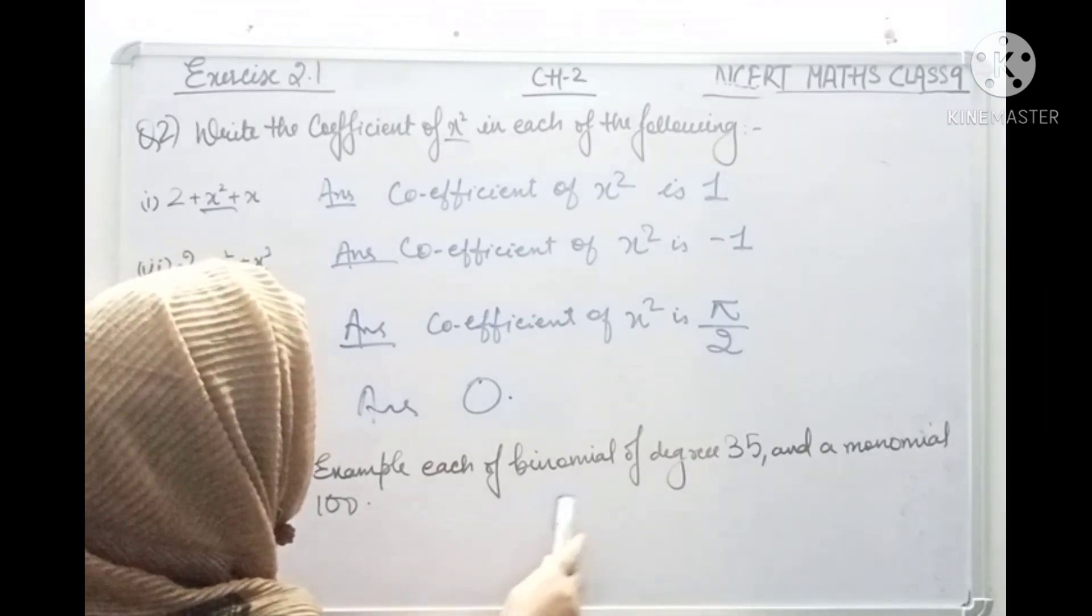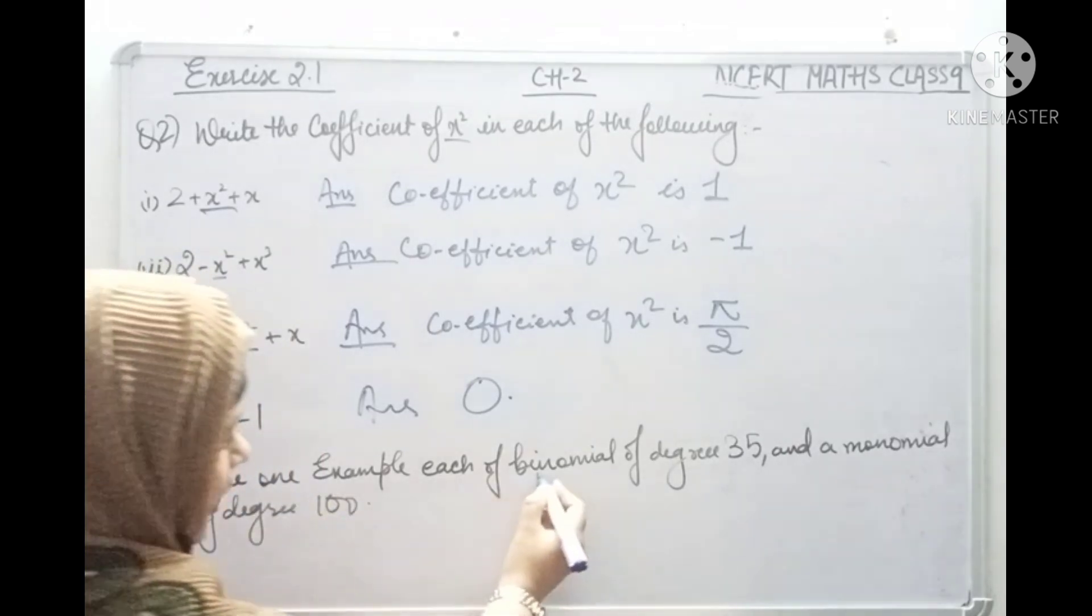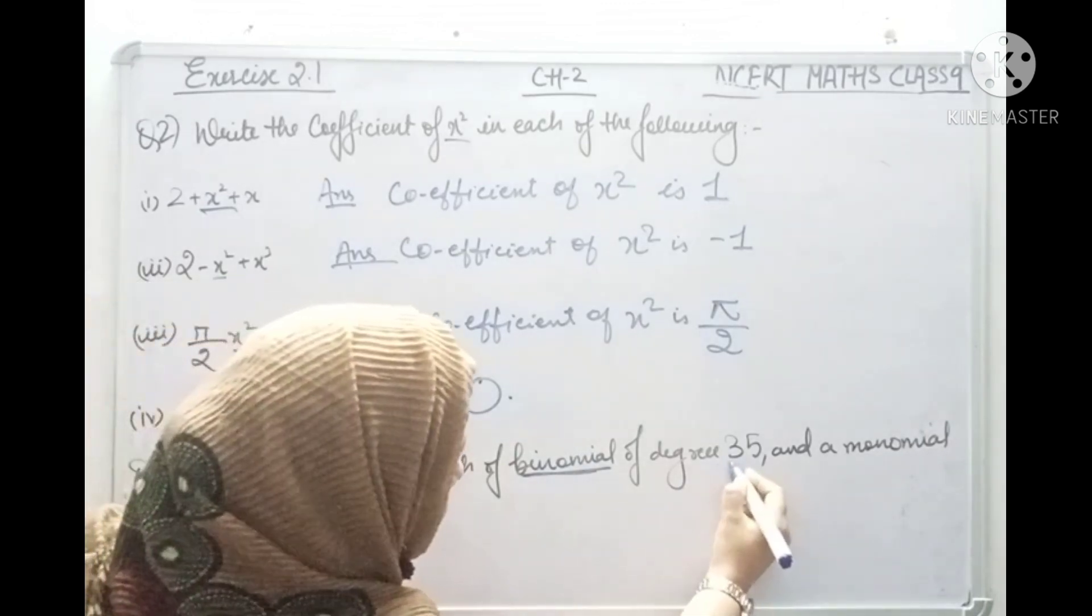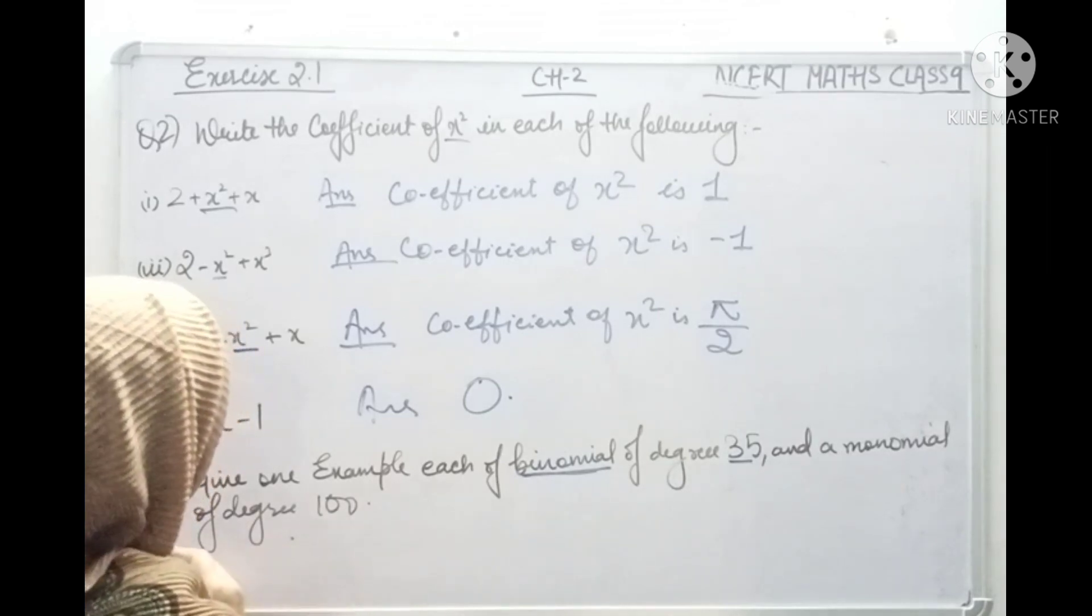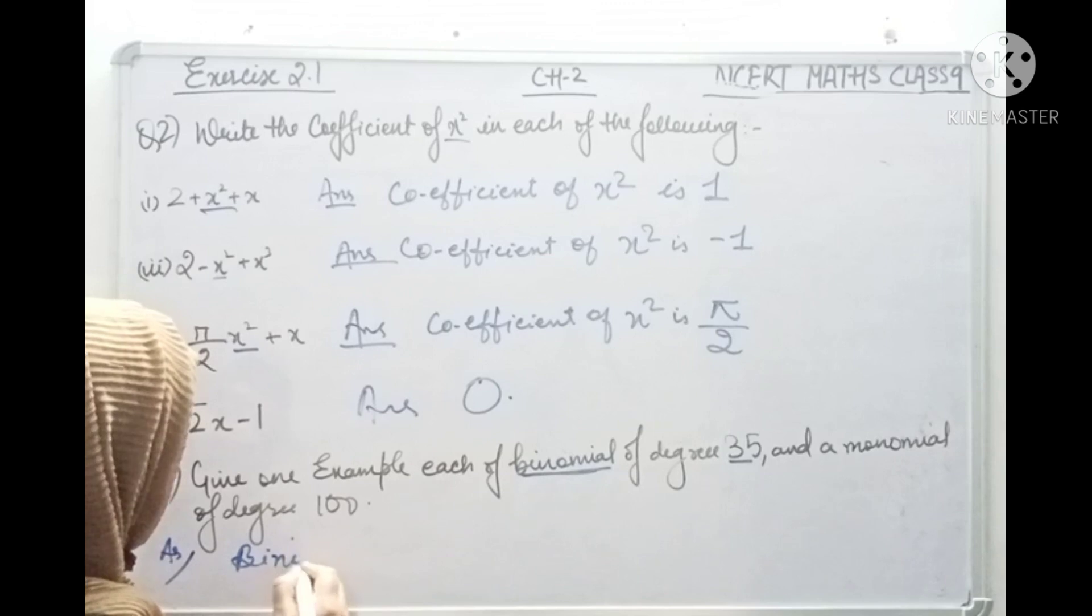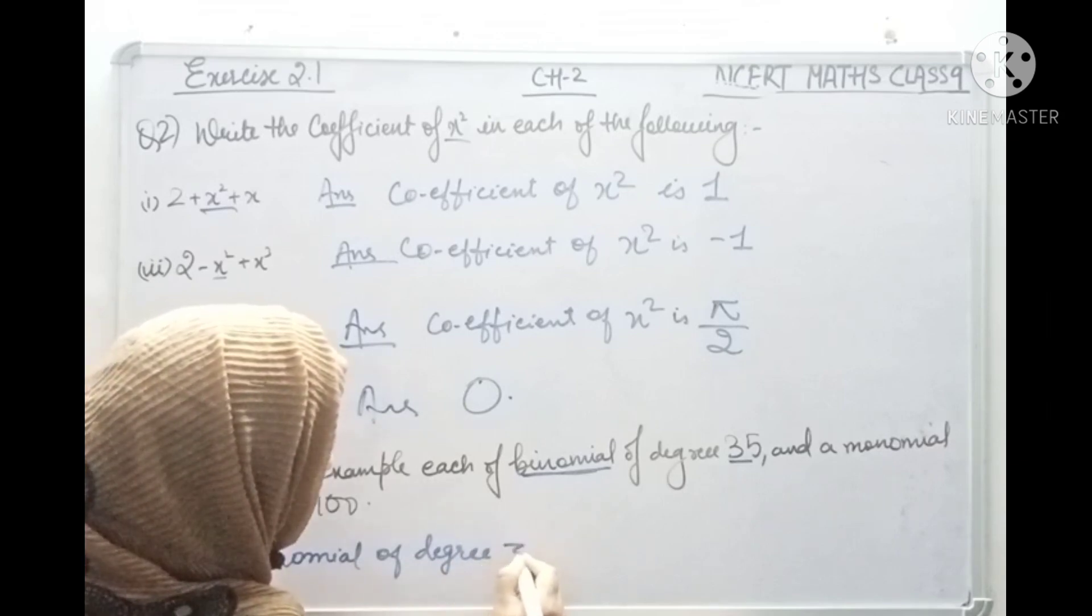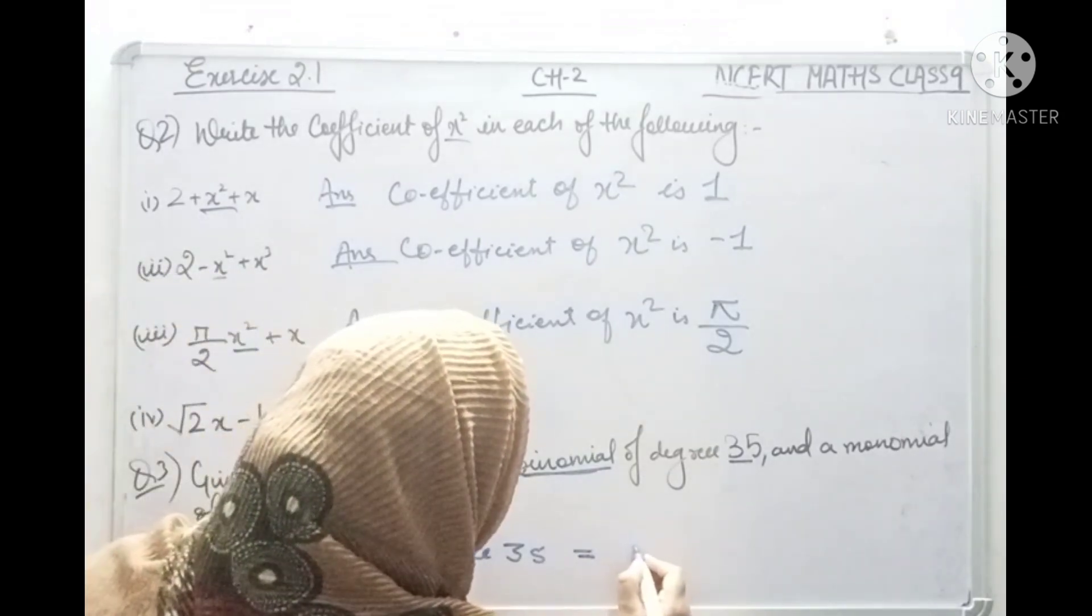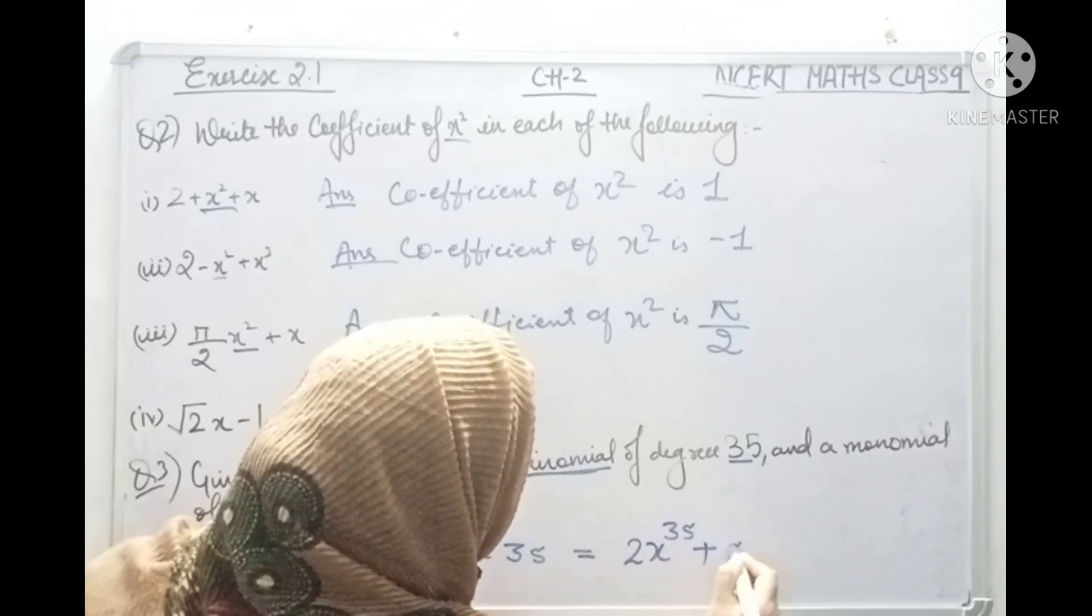The next one is give one example each of binomial of degree 35 and a monomial of degree 100. Let's give an example of the binomial. Binomial means polynomial having two terms. Binomial of degree 35. Let's give 2x to power 35 plus 5. This is binomial.